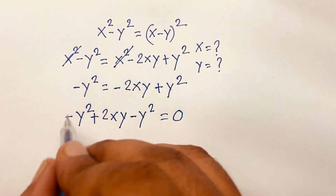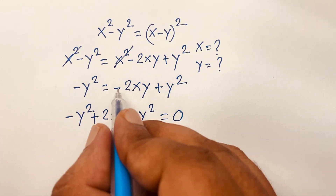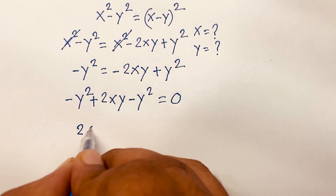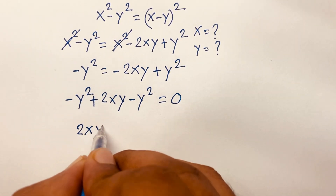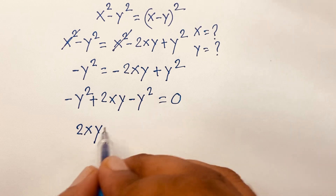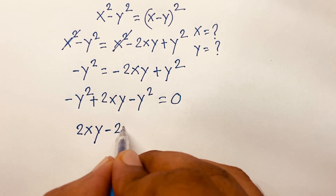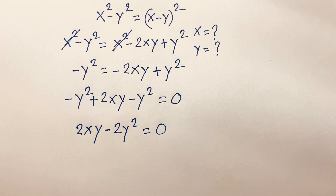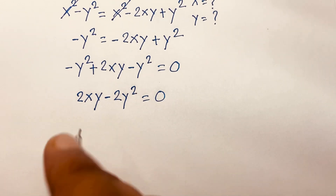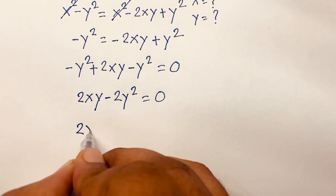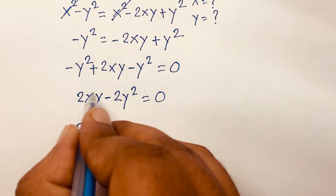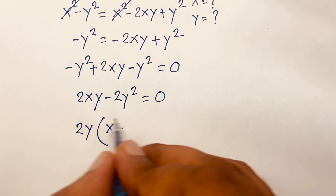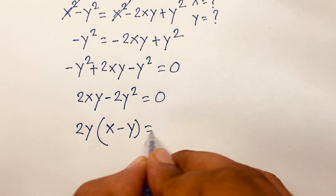Moving terms to the left side and changing signs, we get 2xy minus y squared minus y squared, which gives us 2xy minus 2y squared equals 0. We can see that 2y is a common factor, so factoring gives 2y times (x minus y) equals 0.